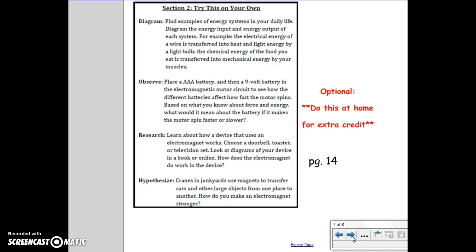Observe: Place a triple A battery and then a 9 volt battery in the electromagnetic motor circuit to see how the different batteries affect how fast the motor spins. Based on what you know about force and energy, what would it mean about the battery if it makes the motor spin faster or slower?